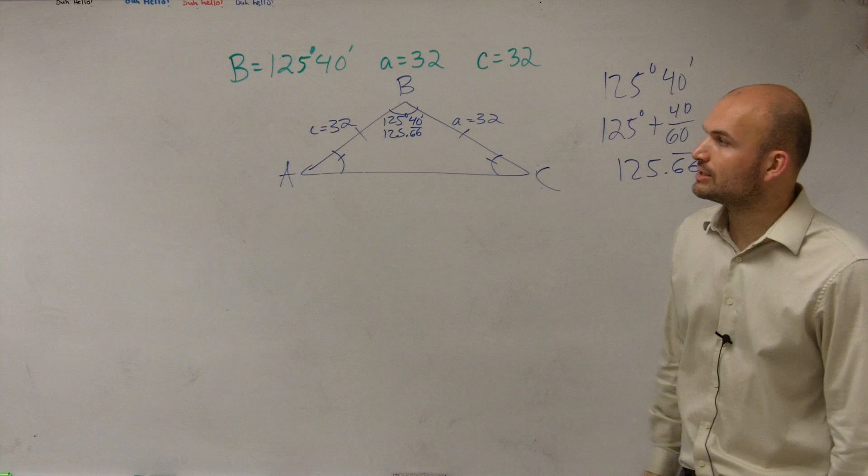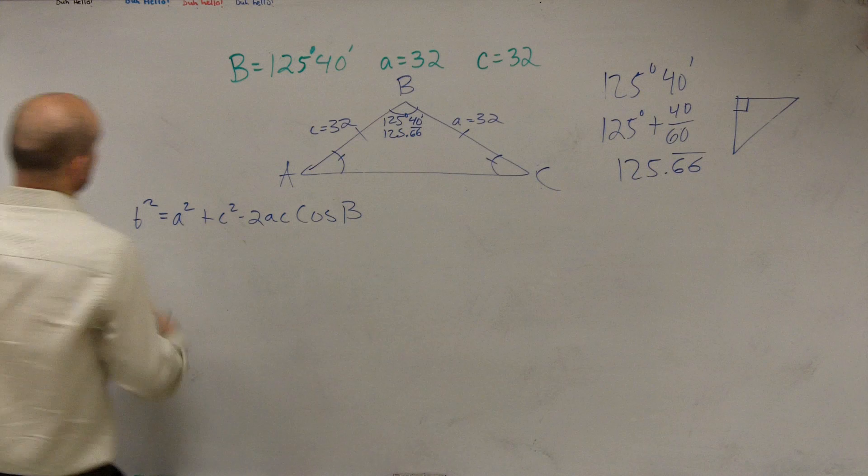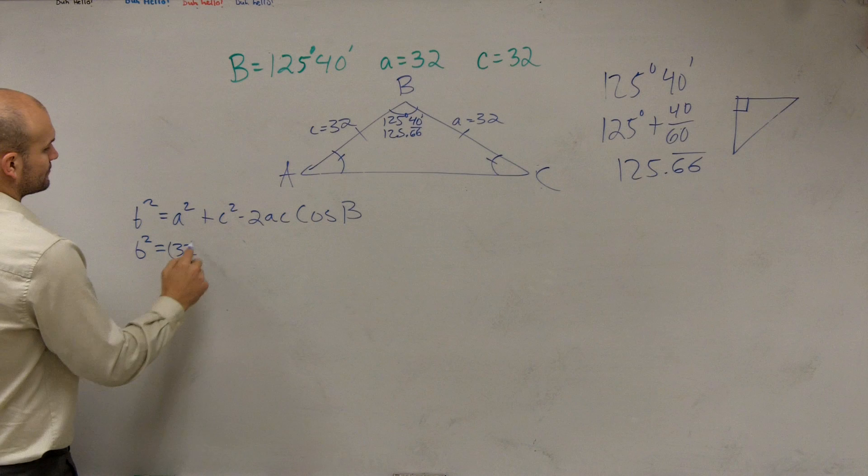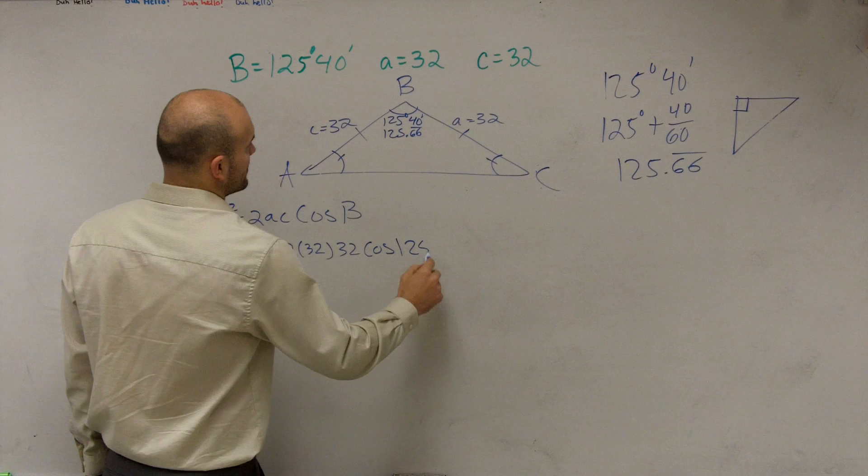And in this case, it has an isosceles. So what we could do here is b squared equals a squared plus c squared minus 2 times a times c times the cosine of b. So now let's plug in the work that we have. We do not know what b squared is. a squared is 32 plus c squared, which is 32 squared, minus 2 times 32 times 32 times the cosine of b, which is 125.66.